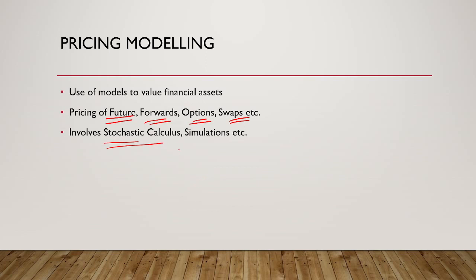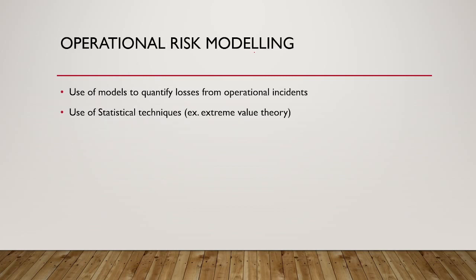A very famous model is the Black-Scholes model, for which the economist who developed it won the Nobel Prize in the mid-1990s. If you have a strong mathematical background — a master's or PhD in mathematics — you can explore many jobs in this department, especially in US-based investment banks.